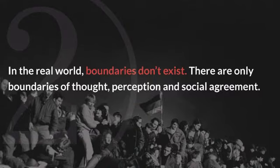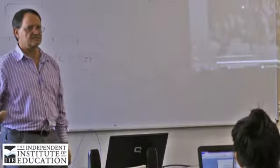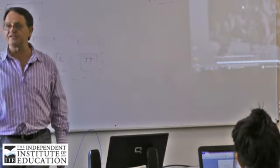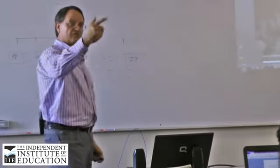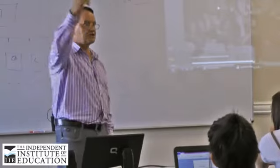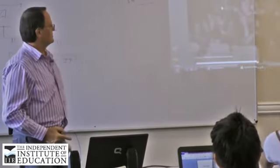In the real world, boundaries don't exist. The only boundaries of thought and perception and social agreement. And I'm always reminded of the saying, the sky is the limit. Not so? Because we say boundaries do not exist, the sky is the limit. And even some people came later on to say, but the sky is not the limit. So you can even go further than the sky, eh?